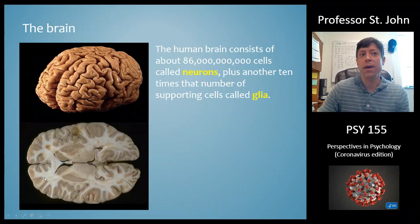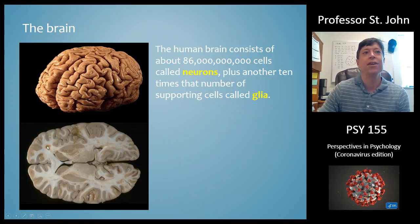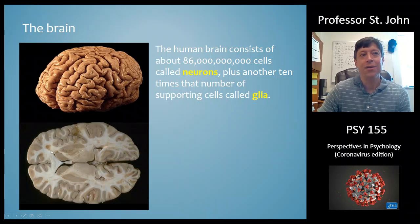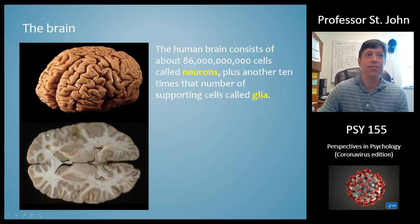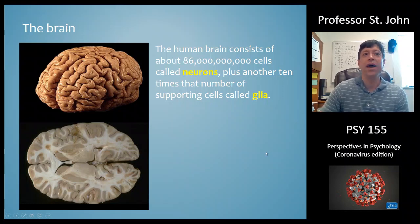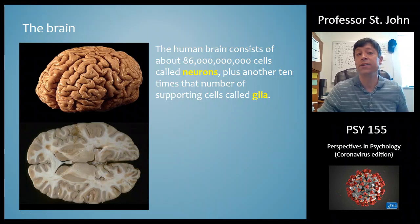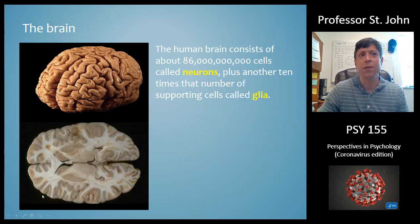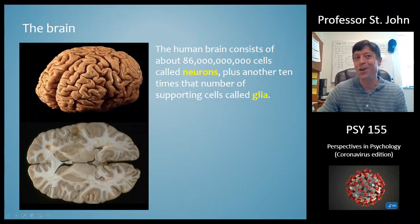Where you see white matter, you know those are connections between brain regions. This big thick area of white matter is called the corpus callosum, connecting the right hemisphere to the left hemisphere. There are other white matter tracks carrying information from one part of the brain to another or from the brain to the spinal cord. This stream here is the internal capsule — white matter taking information from the brain and sending commands down to the spinal cord involved in movement.